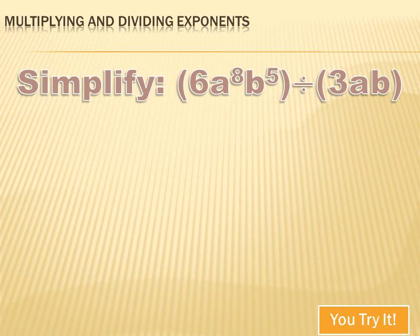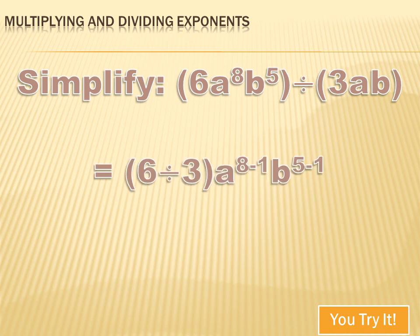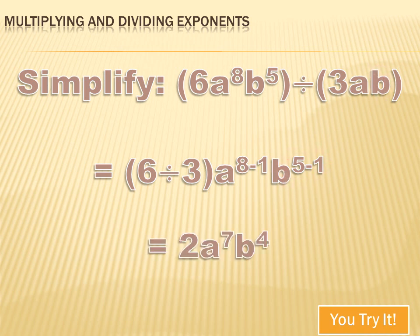This one's kind of tricky. Remember, you can only combine like terms, and you perform your operation on each set of like terms separately. So I take 6 divided by 3, then a to the 8th divided by a (which is a to the 8 minus 1, or a to the 7th), then b to the 5th divided by b (which is b to the 5 minus 1, or b to the 4th). Combining all of those gives 2a to the 7th b to the 4th.